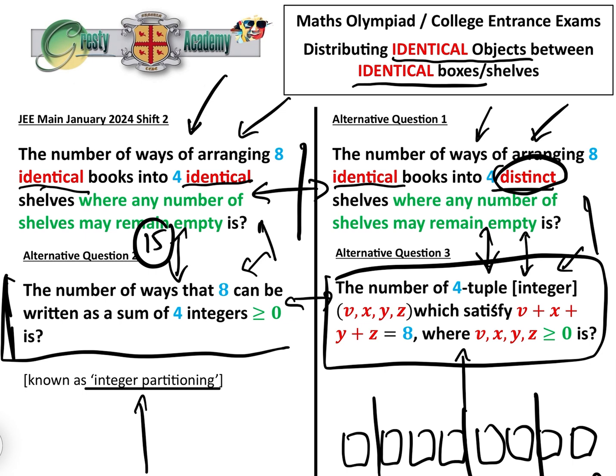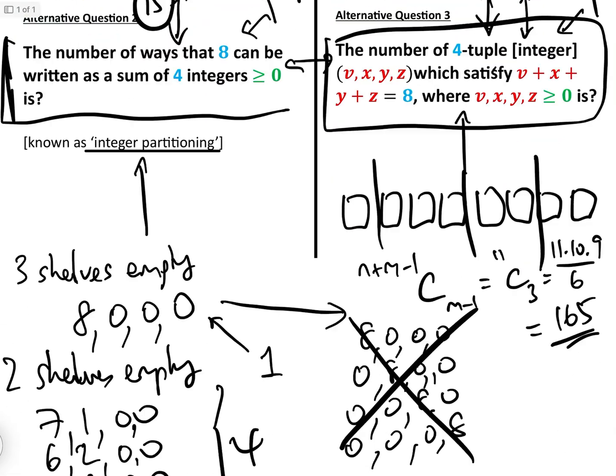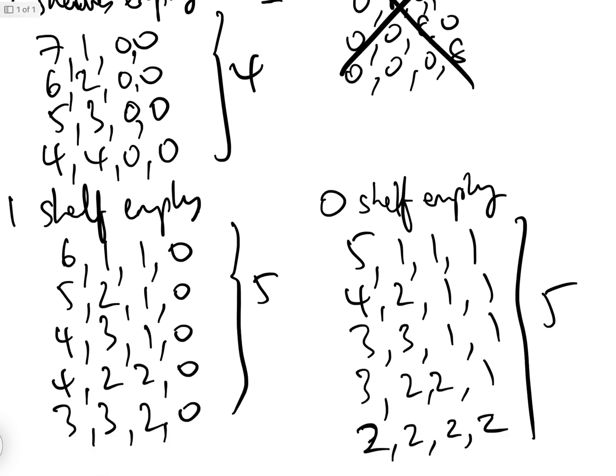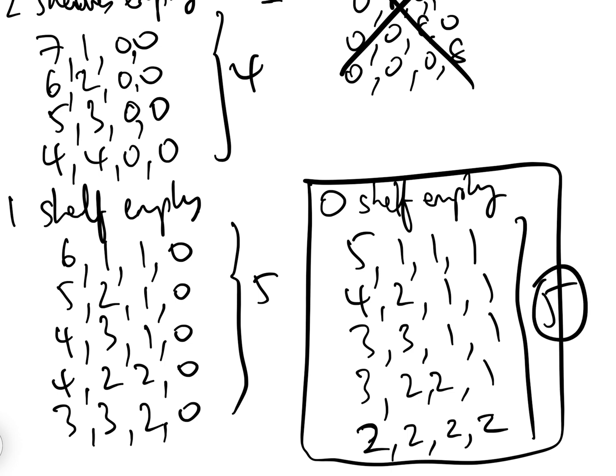Now, one other thing, let's imagine that this question was, for example, the number of ways of arranging eight identical books into four identical shelves, where each shelf must have at least one book. Well, actually, it's exactly the same, because if each shelf must have at least one book, then it's basically just those ones. So the answer would have been 5.